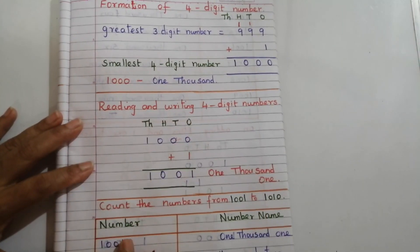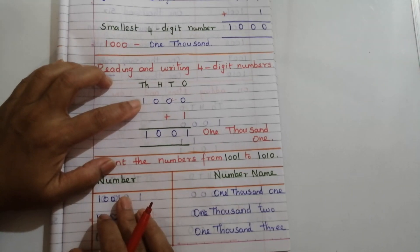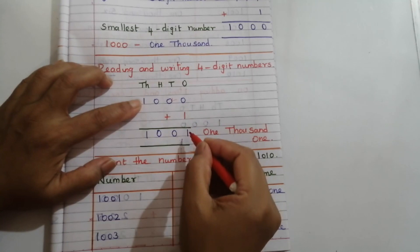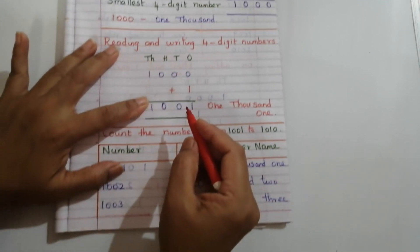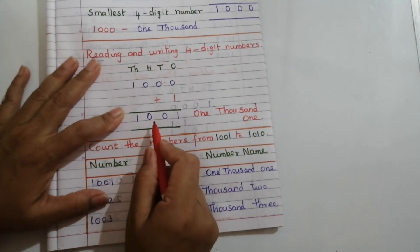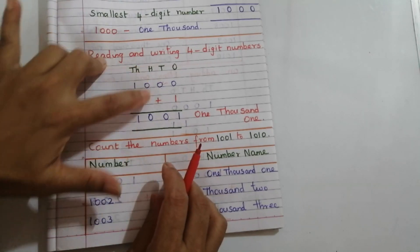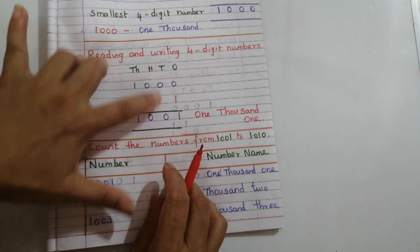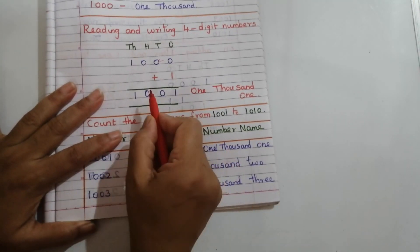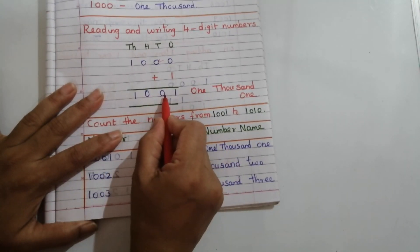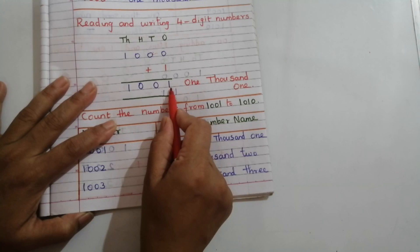The next topic is reading and writing of four-digit numbers. Adding 1 to 1000: 0 plus 1 is 1, so we get 1001. In the thousands place the value is 1, in the hundreds place the value is 0, in the tens place the value is 0, and in the ones place the value is 1.